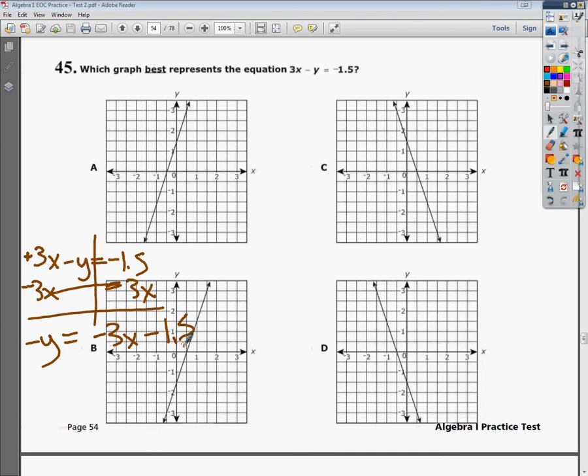Now, from here, I'm left with a negative y, so I'm still not done. In case you don't know, that means it's times negative 1. So, I'm going to divide everything by negative 1. So, it makes my final equation y equals 3x plus 1.5. So, that's what I'm going to graph.